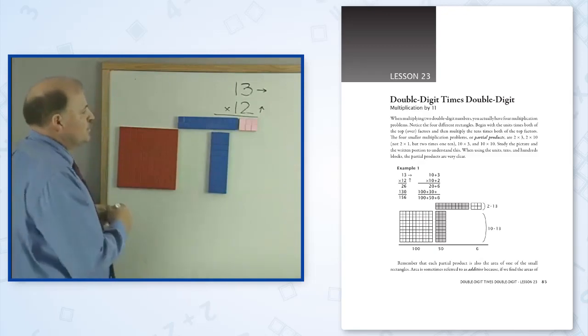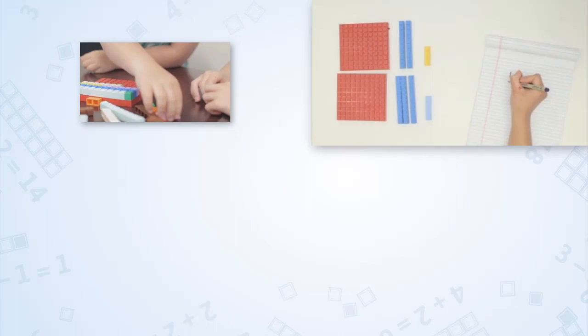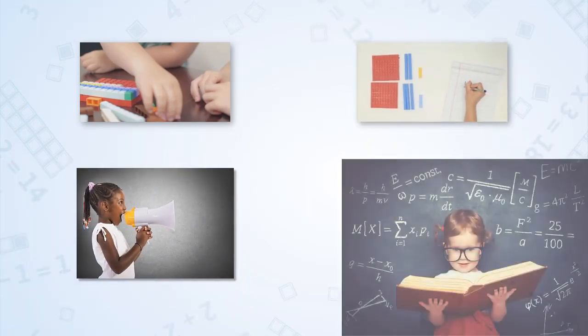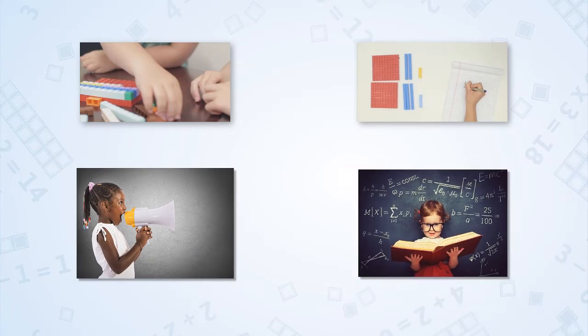Next, be sure to use the build-write-say process. This is essential to ensure that your student is making connections between the model and the symbols. Represent the concept with the manipulatives, write the symbols, explain what you're doing and why. Ultimately, we want the student to be able to use the same process to demonstrate mastery. How this looks will vary from student to student.